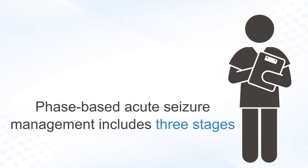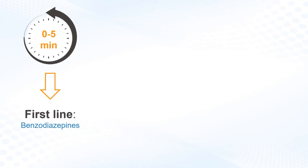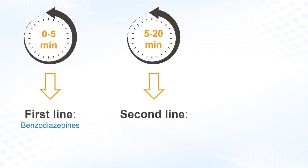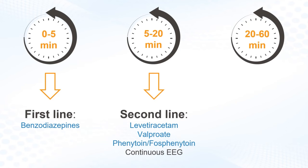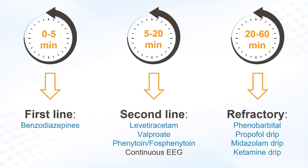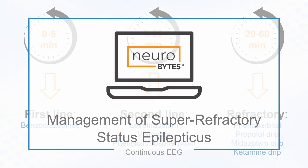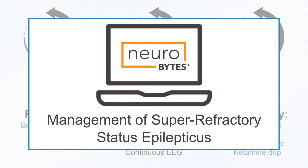Phase-based acute seizure management includes three stages. The first phase occurs between 0 and 5 minutes; first-line agents including benzodiazepines such as lorazepam are commonly used. The second phase occurs from 5 to 20 minutes; an anti-epileptic medication such as levetiracetam, valproate, or phenytoin is administered. Begin monitoring with continuous EEG as soon as possible. The third phase occurs between 20 and 60 minutes, and additional anti-epileptic medications such as phenobarbital or propofol are administered if necessary. To learn more about refractory and super-refractory status epilepticus, watch the Neurobytes video entitled Management of Super-Refractory Status Epilepticus.